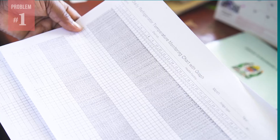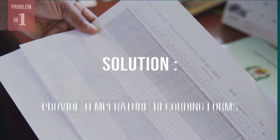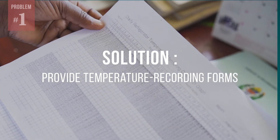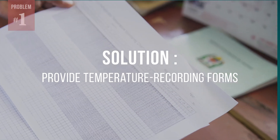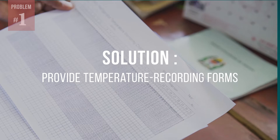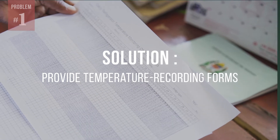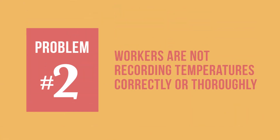Once you have confirmed that the refrigerator has a functioning device, make sure that workers have the temperature recording forms they need — they may simply need some new forms. Here is a similar problem: workers may be recording temperature data, but they may not be doing it correctly or thoroughly.